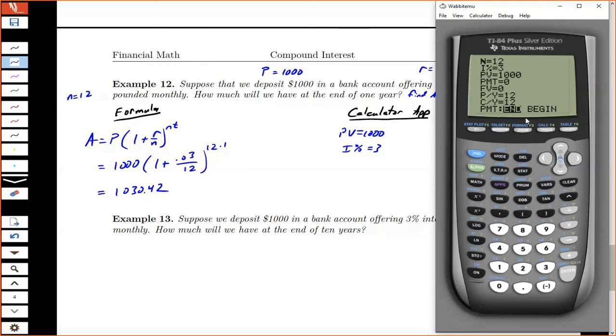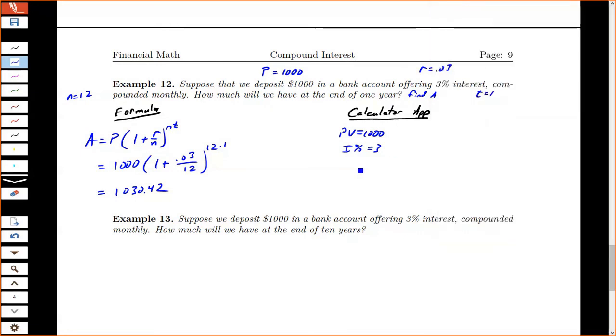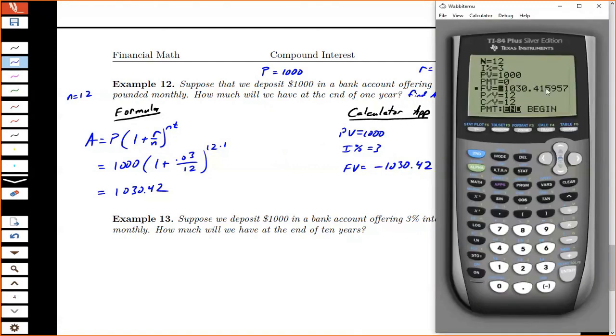So when we get up to future value, if I just hit enter, that's for entering a value. What I want to do is make it solve. So if I look at my calculator, solve is above the enter button, in this case in green. So I hit the green alpha to be able to hit solve. And then it will solve for me. So it says this future value gives me negative 1,030. And again, if I round, it'll be 0.42.